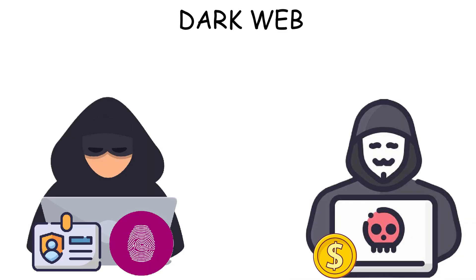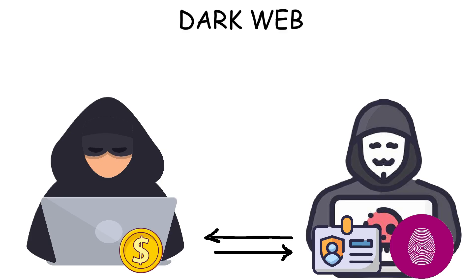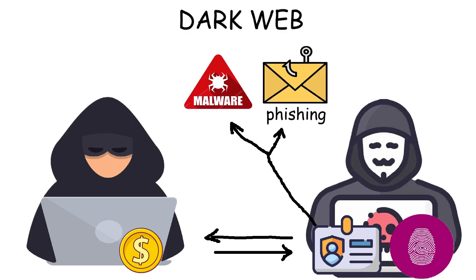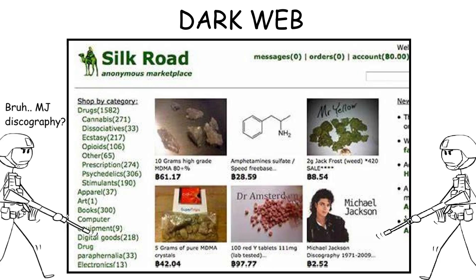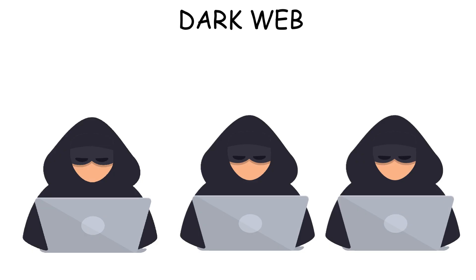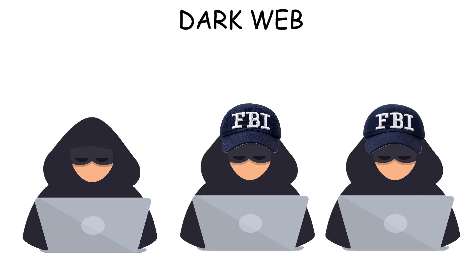Common content on the dark web includes trading stolen data or hacked accounts, often obtained through phishing or malware like spyware. There are also black markets like Silk Road, which once sold drugs, weapons, and fake documents before being shut down by the FBI in 2013. Today, similar markets still exist, but some are actually operated by undercover government agents to trap bad actors who try to conduct transactions there.